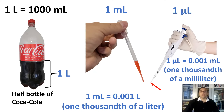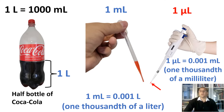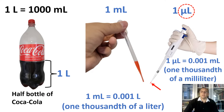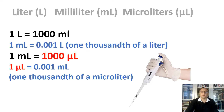One milliliter equals 1,000 microliters, meaning one microliter is one thousandth of a milliliter. A thousand of these microscopic microliters make up one milliliter. Microliters are abbreviated as µL — the Greek letter mu and capital L. To measure such minuscule volumes as microliters, we use micropipettes in the laboratory, which require special training not covered in this video.